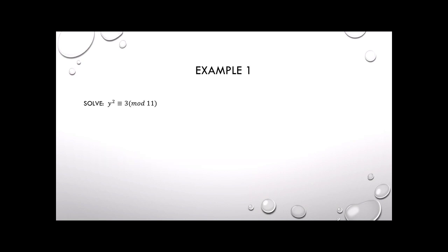Let's start with a simple example: y squared is congruent to 3 mod 11. Now, 3 is not a perfect square, but 3 is congruent to 14 mod 11. Adding 11 again, we get 25, which is a perfect square.